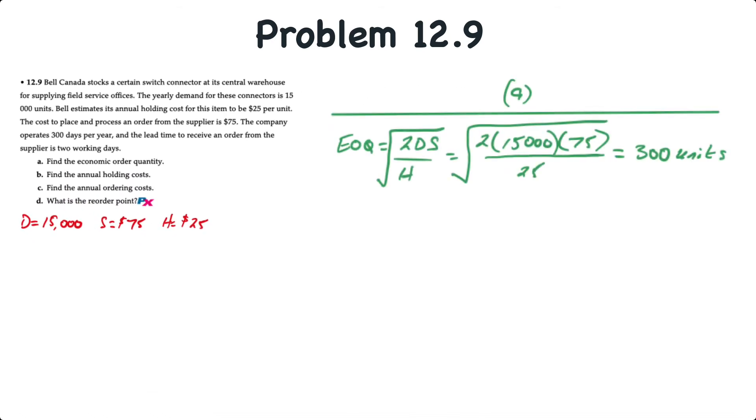Requirement A, EOQ is equal to two times the demand times the ordering cost divided by the holding cost, and we take the square root of that. So the square root of two times 15,000 times 75 divided by 25, that's 300 units.